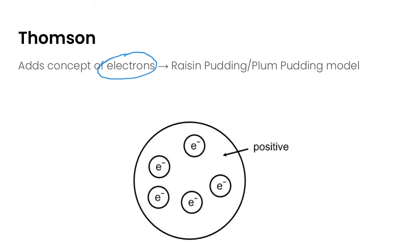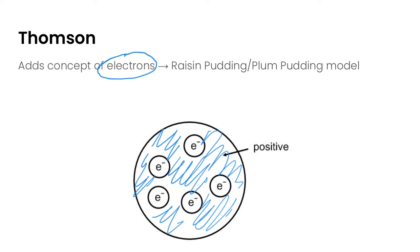He suggested that an atom is mostly positively charged space. Everything colored in blue there is positively charged, and then we have these little bits of negative charge which are our electrons. He was a British scientist, so he named his model the raisin pudding or plum pudding model.